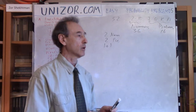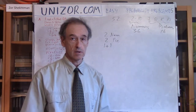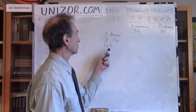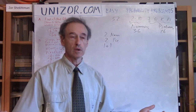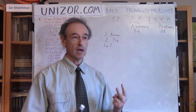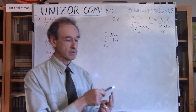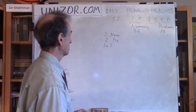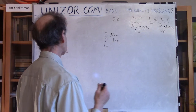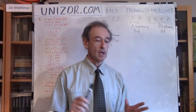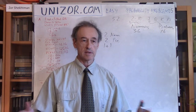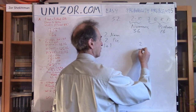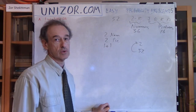These 3 cases — 2 numerics, 2 pictures, or 1 numeric and 1 picture — are mutually exclusive events that together cover the whole set of different choices when picking 2 cards. There are no other possibilities. The elementary events comprising our sample space are all the different pairs from the 52 cards, which is the number of combinations from 52 by 2. Now let's talk about the probabilities for each case.